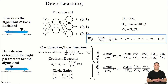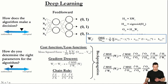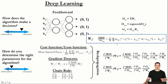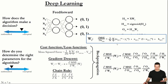Welcome to part 11 of the basics of deep learning series. In the previous video we left off at the point where we had written down the formula representing the scalar notation for finding the partial derivatives of the mean squared error with respect to all the weights of weight matrix 2.